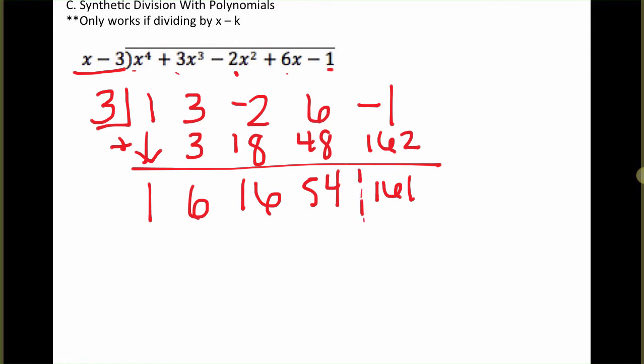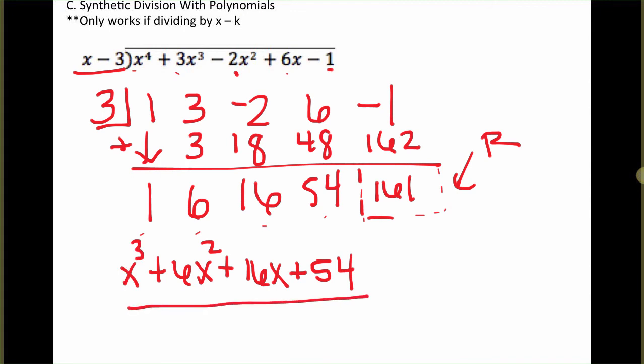So this last number that we get is, again, our remainder, the 161. And then as we go backwards, we're going to add in an x each time. So 54 will be the constant. The 16 will go with an x. 6 will go with an x squared. And then 1 will go with an x cubed. This here is the quotient. The 161 is the remainder. And we can write our final answer like that.